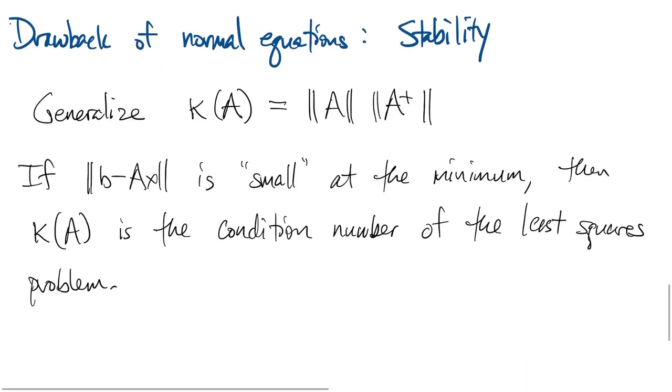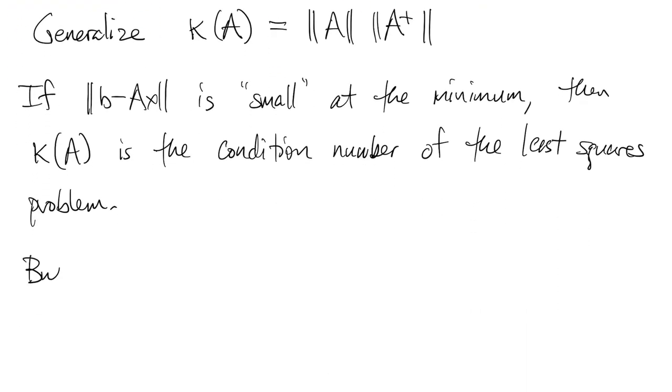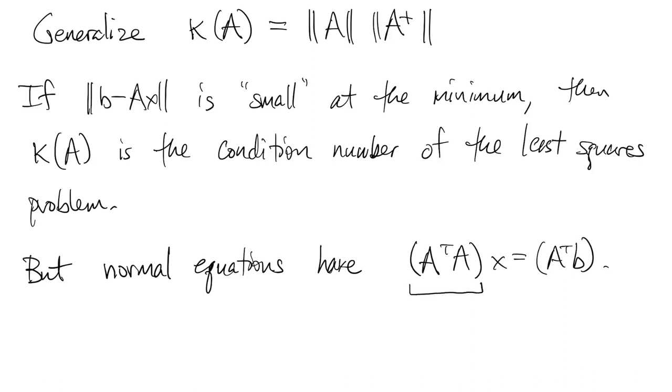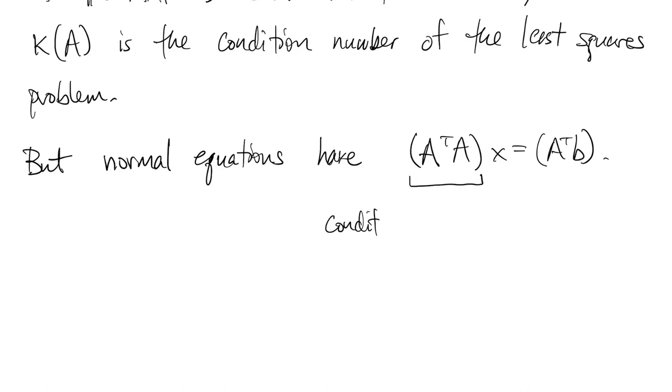So that's similar to what we saw for linear systems. But now when you think about the normal equations algorithm, well, the first thing you do is to make this matrix A transpose A, and that's what you solve with. So what really matters to the algorithm is the condition of this solving step, which is the condition number of A transpose A, and with a little work you can show that that's the square of the condition number of A.